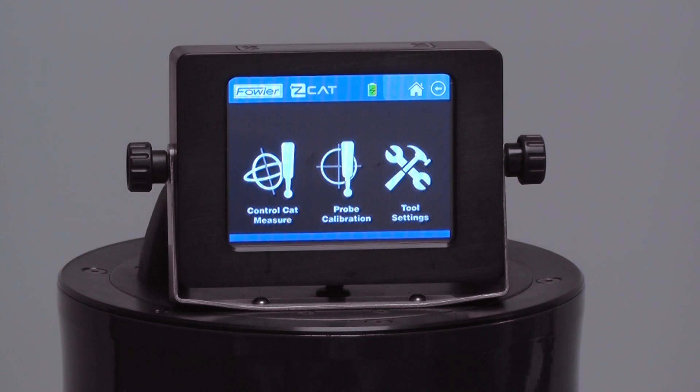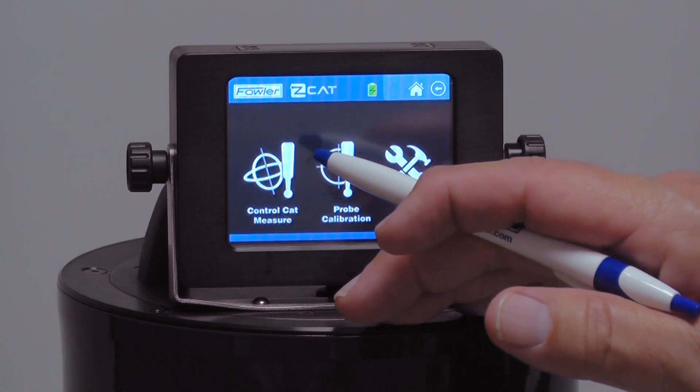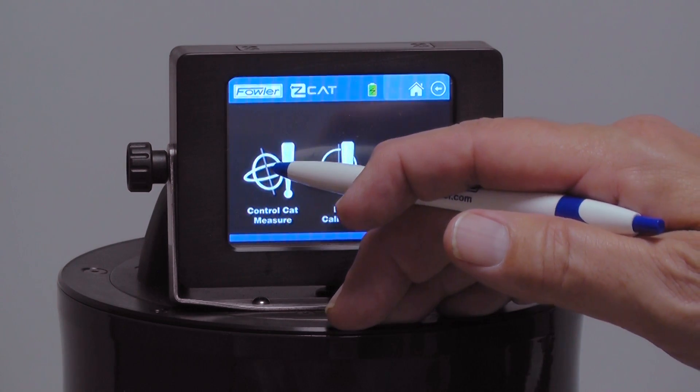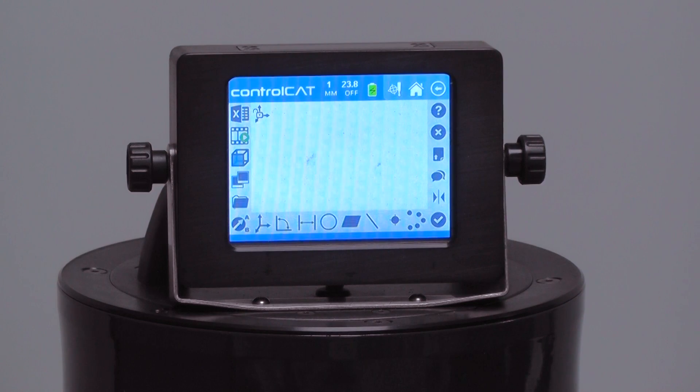Okay, now we're going to go through some of the functions of the Control Cat software that's built into the Z cat. This is software that comes with every Z cat. It is fully functional to do a lot of geometric measuring on the Z cat and make it completely portable. So I'm going to hit the Control Cat key.